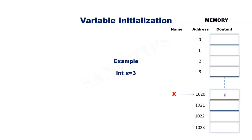Later, we can change the value of the variable using an assignment statement. For example, after the initial declaration, if we execute x equal to 10, then the value in x will change to 10. That is all about variables in C programming. Thank you for watching.